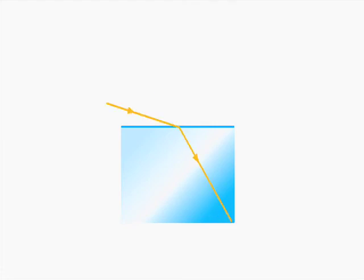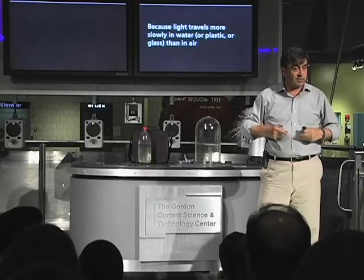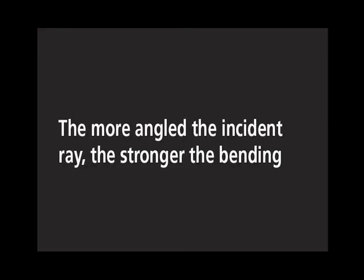If you take a ray of light and you shine it into water, the angle will change. Now suppose I make the angle larger. What will happen to the amount of bending? It will become more pronounced, because one side hits the slower medium more early than the other side. So the bigger the angle, the more pronounced the bending is — a little bit here, more strongly there, and so forth.